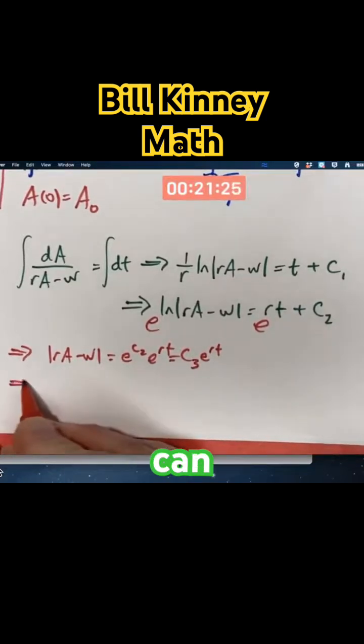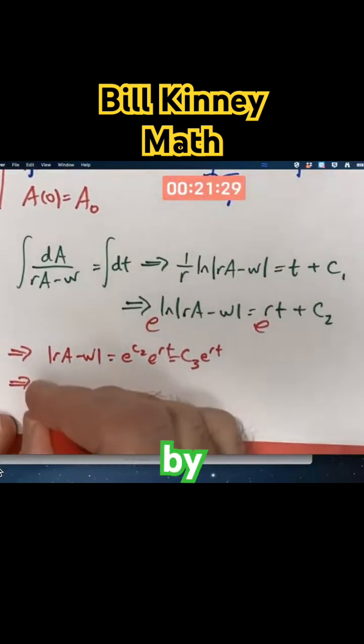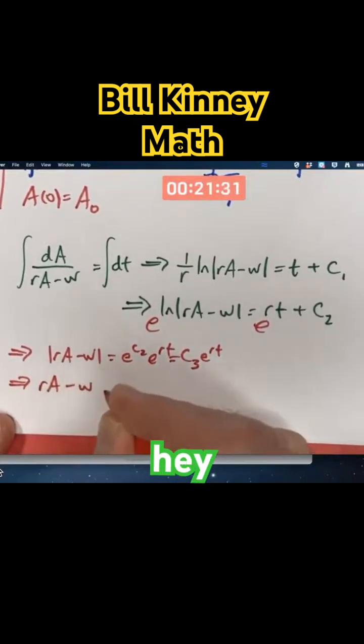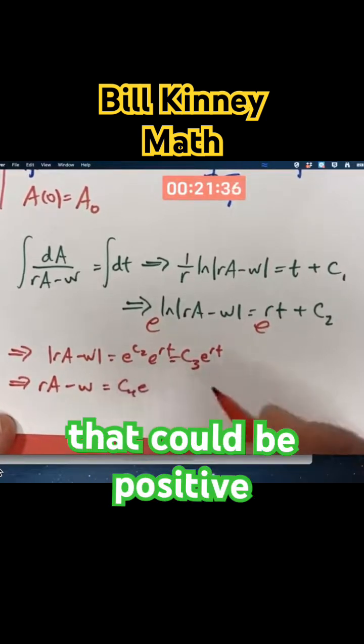And then we can pseudo-justify getting rid of the absolute value signs by saying, hey, C3 has got to be positive. But if I write, say, C4, that could be positive or negative.